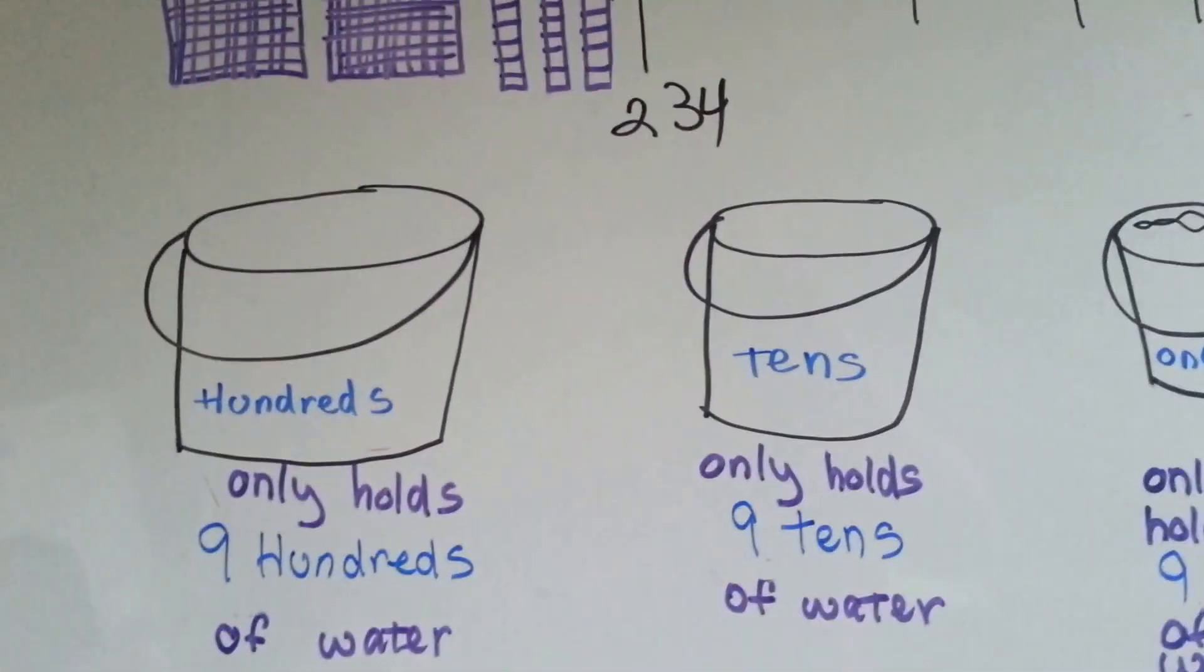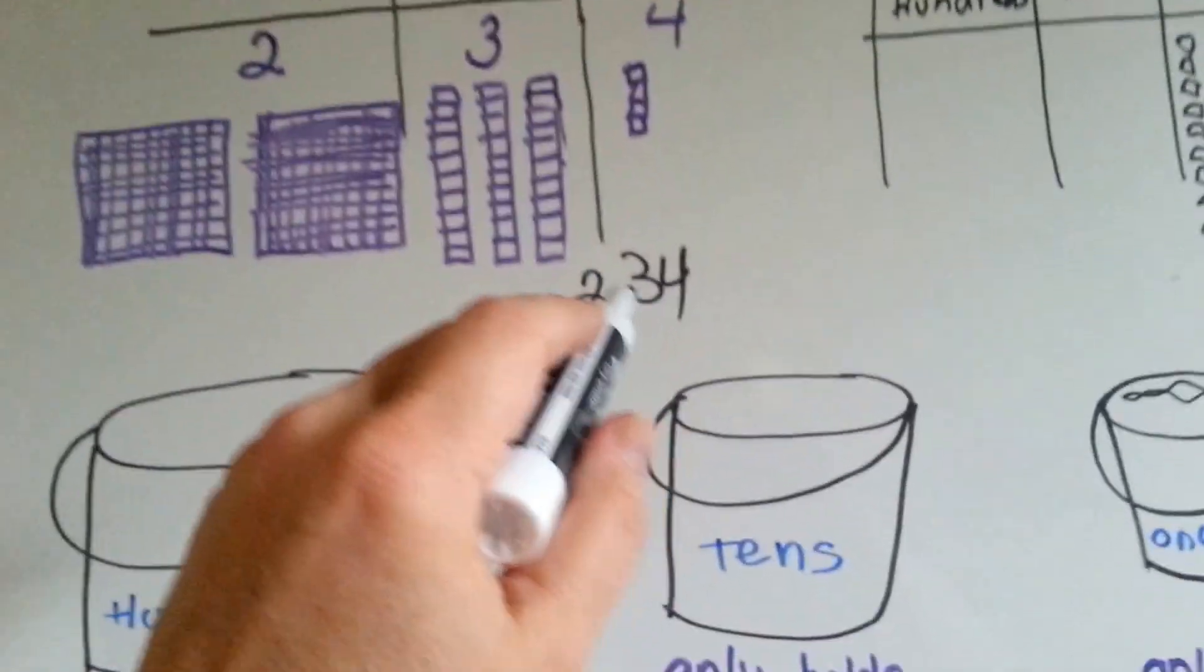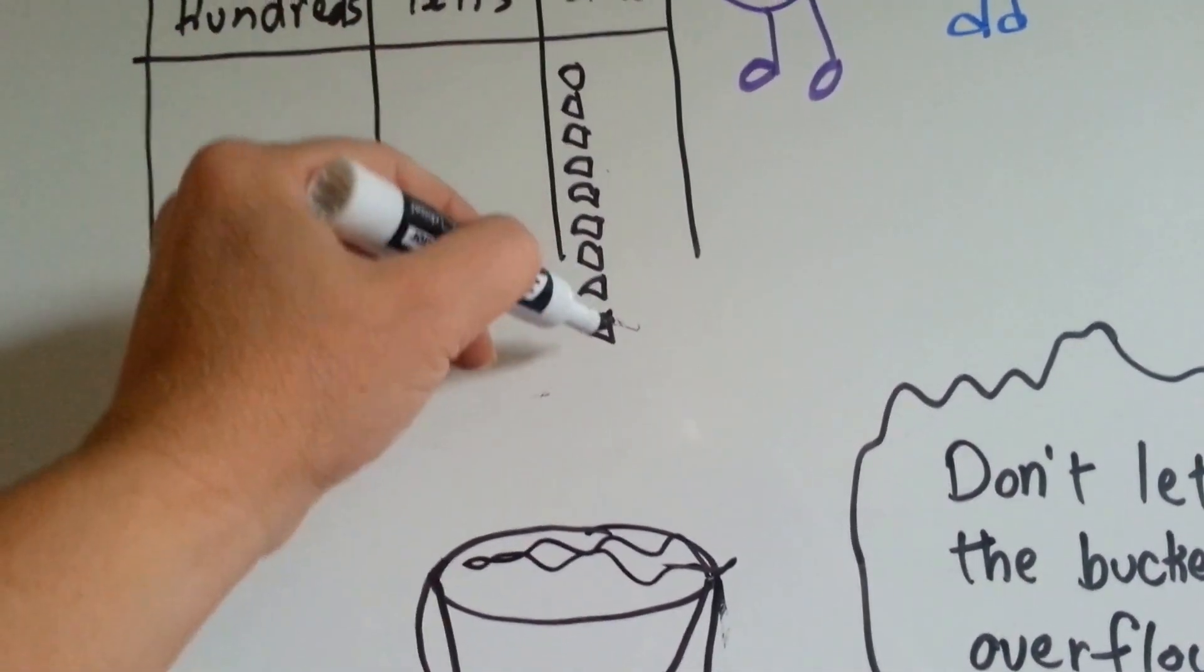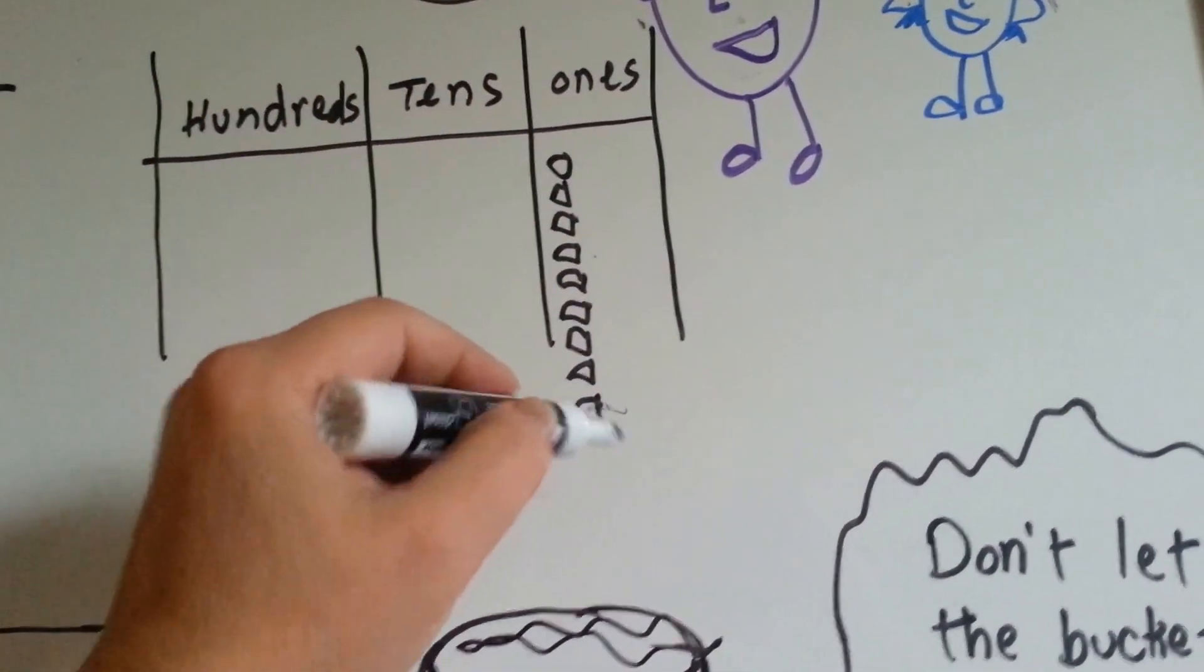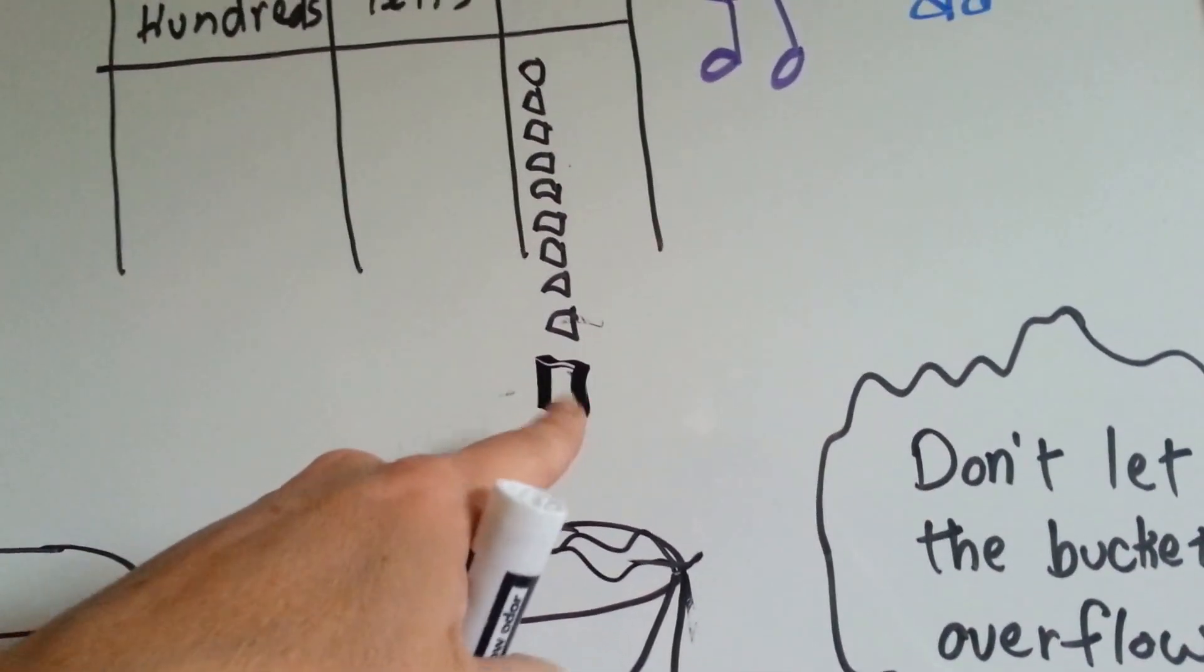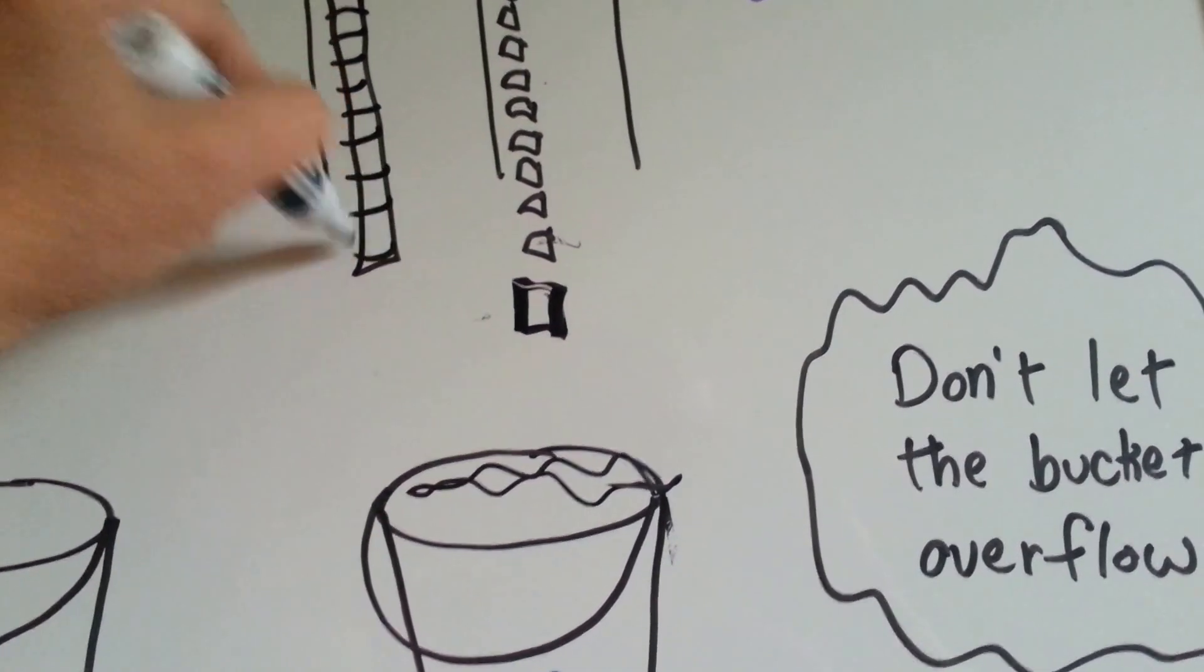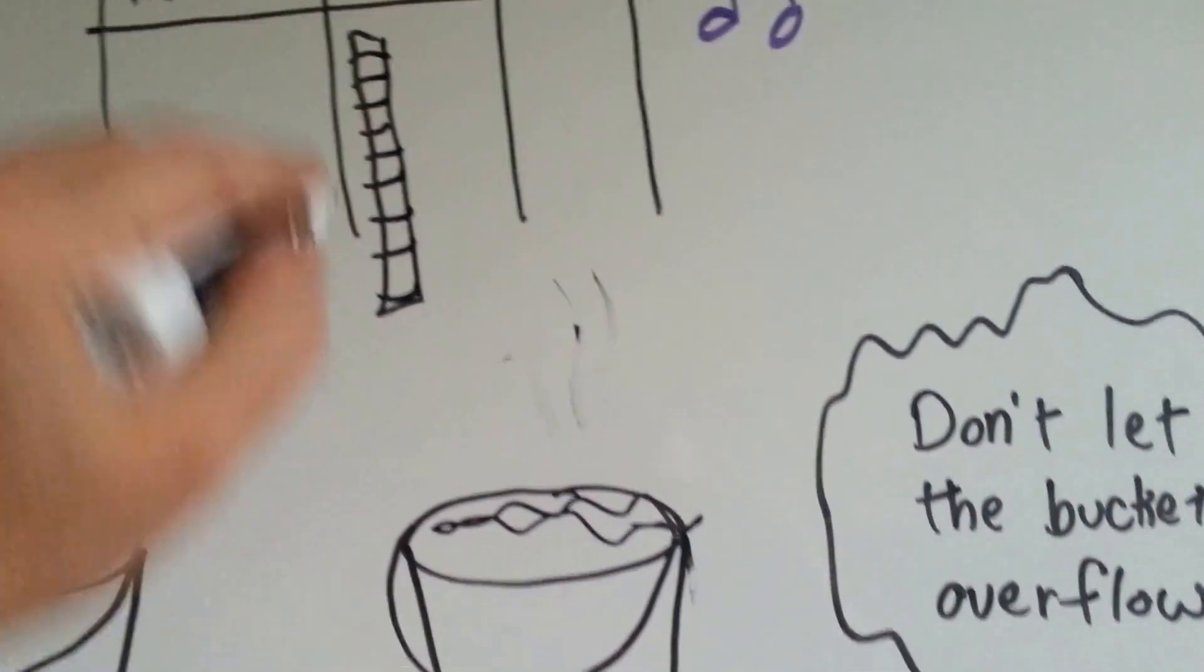Now, what happens if you put too many into one column? Here's 1, 2, 3, 4, 5, 6, 7, 8, 9 squares. That's all the ones can hold. The minute you add 1 more, it becomes a 10. A bar of 10. And the ones all go away. It's now a 10.